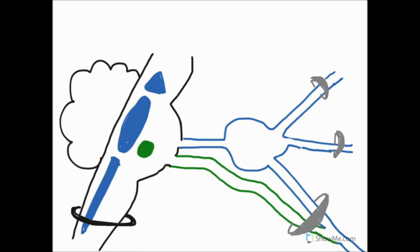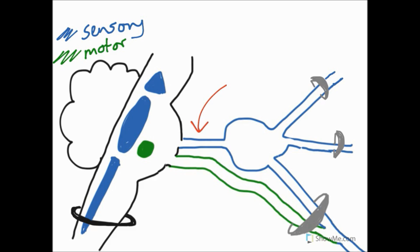I've tried to colour code things, so let's draw a little key. Anything in blue is going to be talking about sensory information, and anything in green is going to be referring to motor. We have three blue sensory nuclei in the brainstem and one green, and we have some blue nerves and a green nerve. These are representing a sensory root and a motor root of the trigeminal nerve, and you'll see that both are leaving the pons. The motor root is not as large as I've drawn it, but I've drawn it large so you can see more clearly.